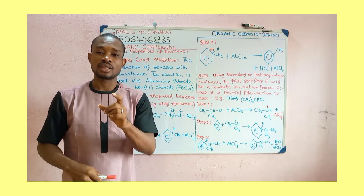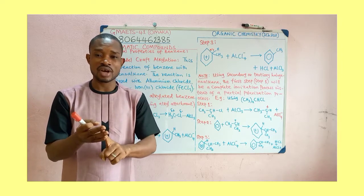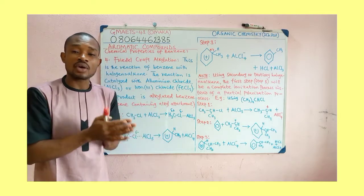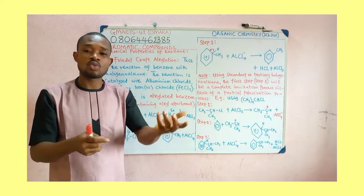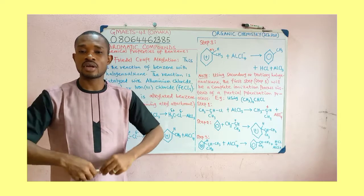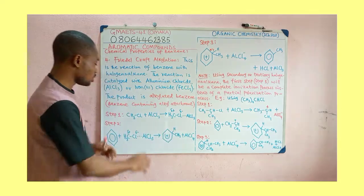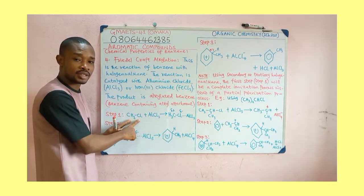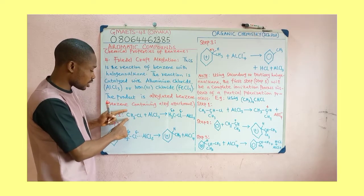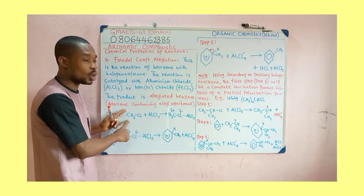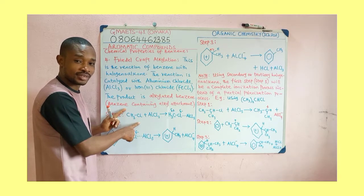We need to take care of something. We have primary haloalkanes, secondary haloalkanes, and tertiary haloalkanes. If it is a primary haloalkane that you use, the first step of the reaction will be a bit different from when you use either secondary or tertiary haloalkane. For example, methyl chloride — you can see that the carbon bearing the chlorine has no alkyl group attached to it, so this is a primary haloalkane.